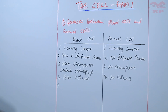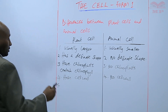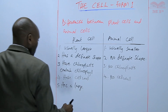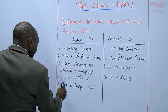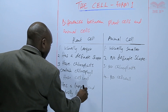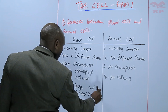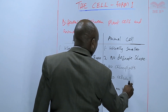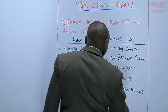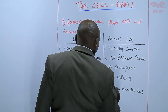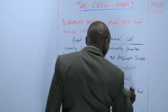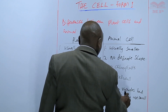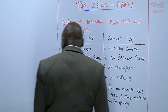For the plant cell, it has a large and centrally located vacuole. But the animal cell has no vacuoles. But if present, they are very small and temporary — they don't persist throughout the life of the animal.